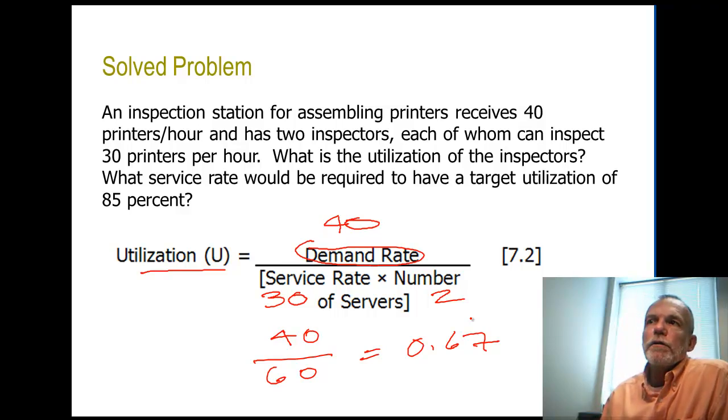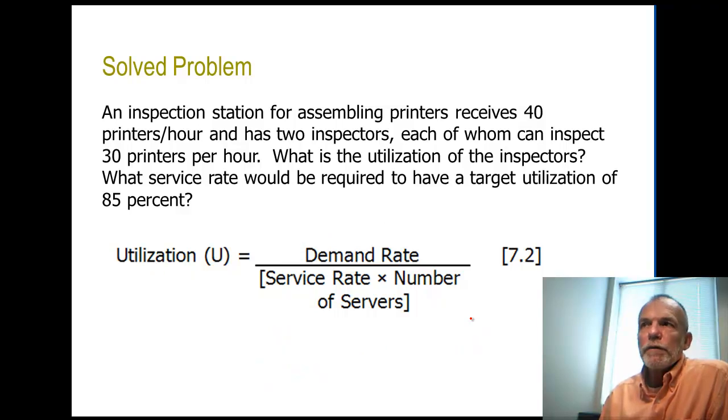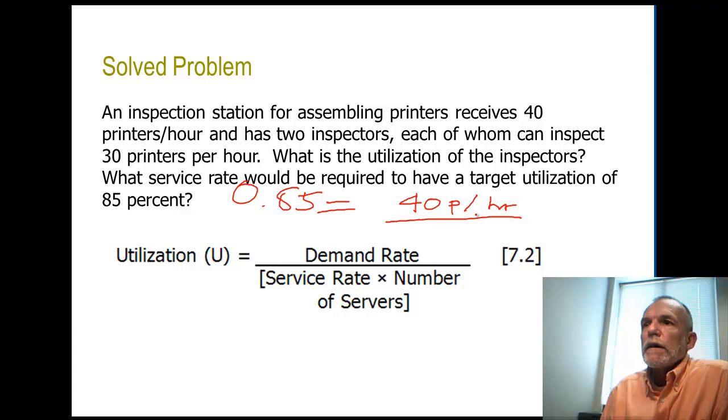Part two of this is what service rate would be needed for a particular target utilization, and the target utilization is 85 percent. So at 85 percent, 0.85 equals the demand rate is still 40 printers per hour. We don't know the service rate, that's what we're solving for. And the number of servers remains at 2.